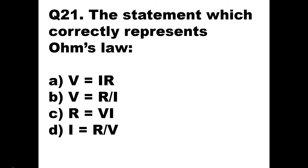Question number 21: the statement which correctly represents Ohm's law. We know that Ohm's law states that a current flowing through a conductor is always proportional to the potential difference across its two ends, provided the temperature is constant. So we always state it as V = IR, where R is a constant. This first formula, V = IR, is the correct answer here.